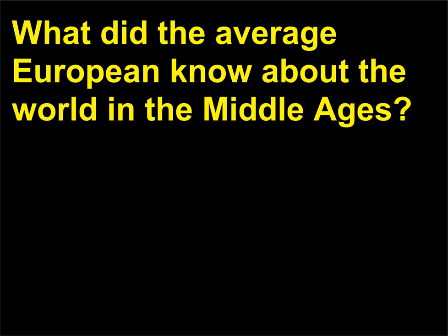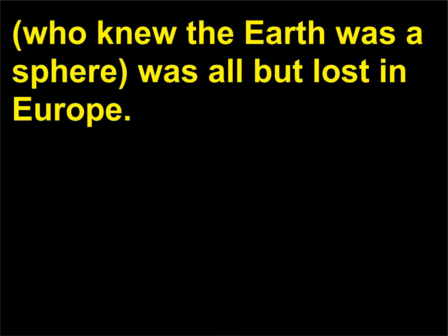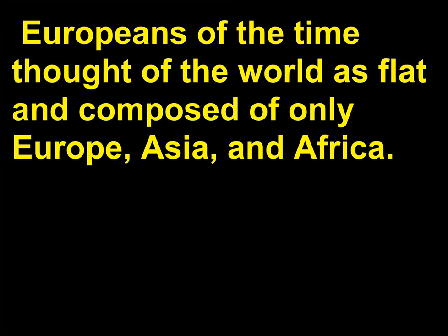What did the average European know about the world in the Middle Ages? In Europe in the Middle Ages, most individuals' knowledge of the world was quite limited. Geographic knowledge developed by the Greeks and Romans, who knew the Earth was a sphere, was all but lost in Europe. Europeans of the time thought of the world as flat and composed of only Europe, Asia, and Africa.